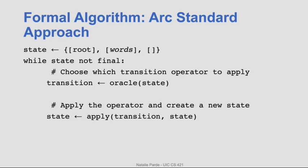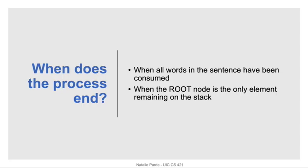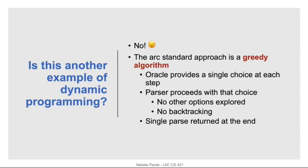Here's the formal algorithm for the ARC standard approach — it's really, really simple. You initialize it with a stack containing just the root, an input buffer containing the list of words in order, and an empty set of dependency relations. Then, looping through until you reach your final state, you decide which transition operator to apply and apply it to create the next state. You'll know you've reached your final state when all words in the input buffer have been pushed onto the stack and the root node is the only element remaining on the stack. Although we've looked at many examples of dynamic programming in this course, the ARC standard approach is not an example of dynamic programming. It's a greedy algorithm where an oracle specifies the operator given the current state. The parser applies that operator without backtracking, and a single parse is returned at the end.